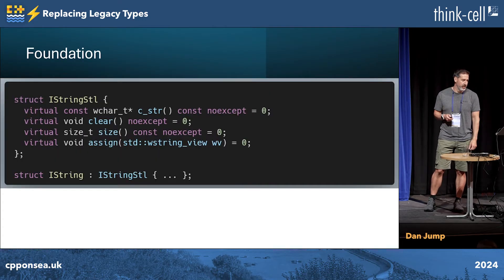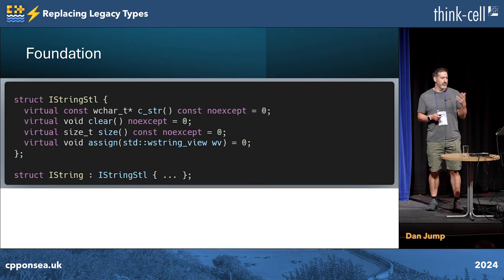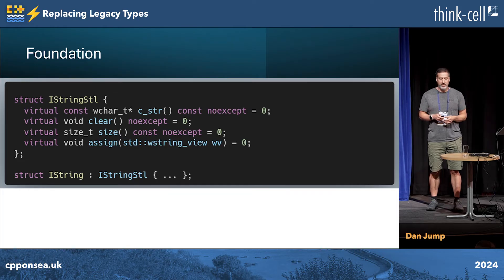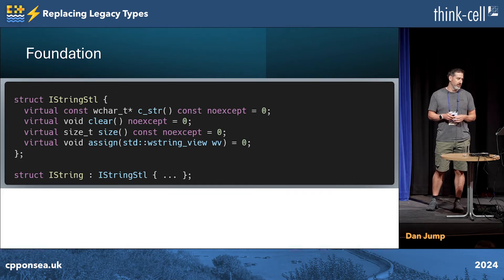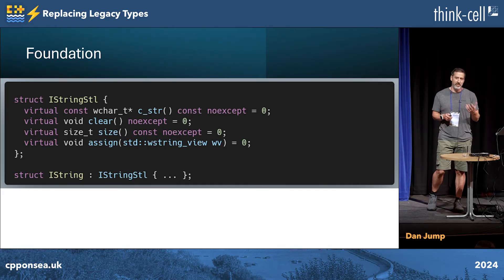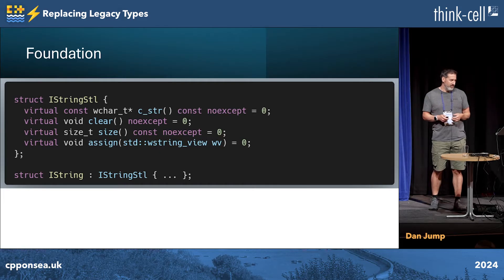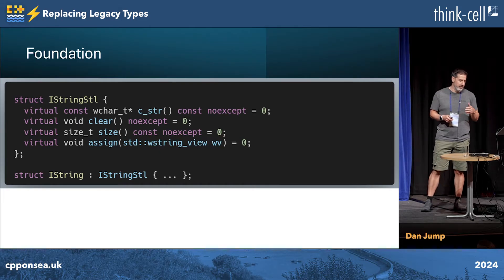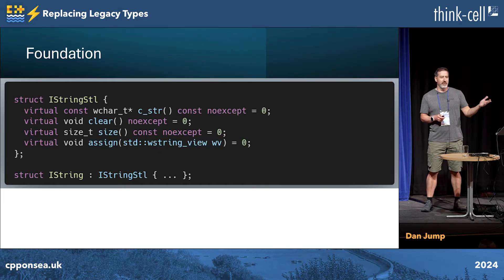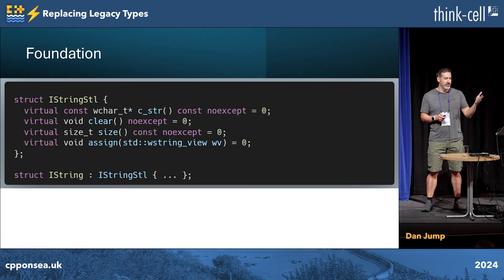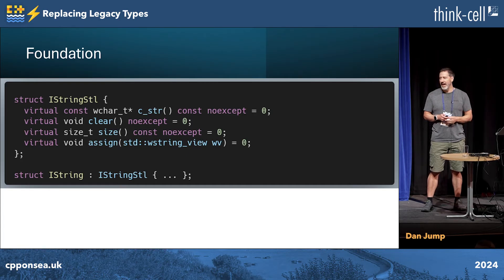The first step I went with is adding this base STL interface on the string that has methods that look like std::wstring. I added things here as I needed, but basically I needed c_str, size, clear, assign, at, data, and a couple others.